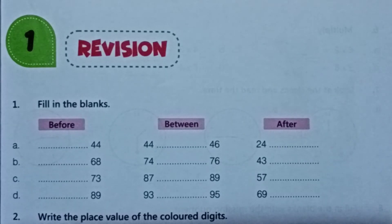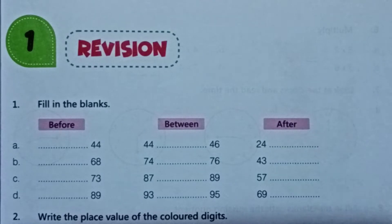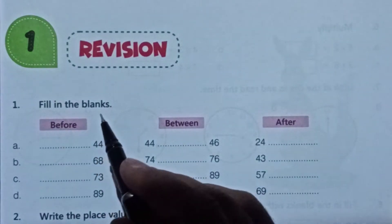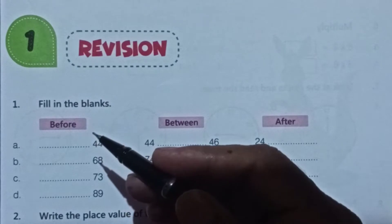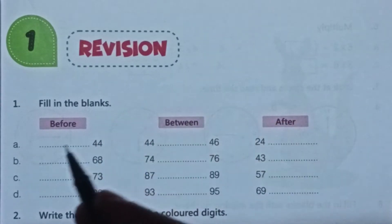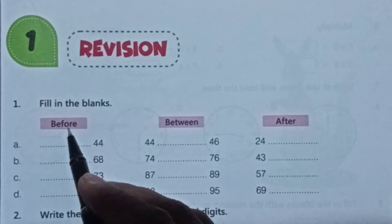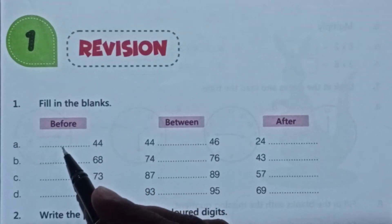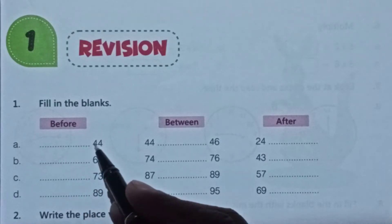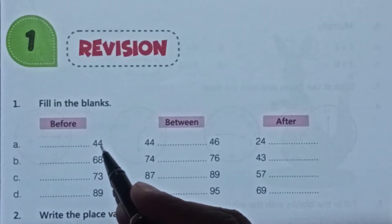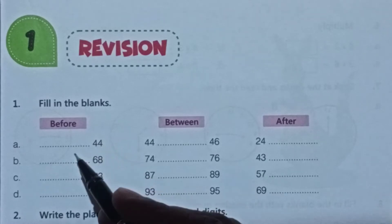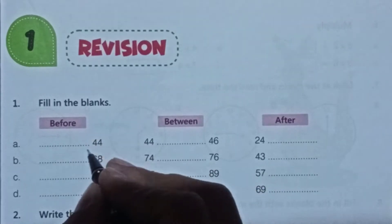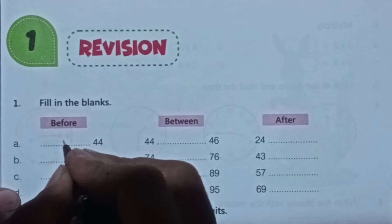On page number seven, question number one is fill in the blanks. The first part is 'before' — we have to write the number that comes before the given number. First: 44 — before 44 comes 43.